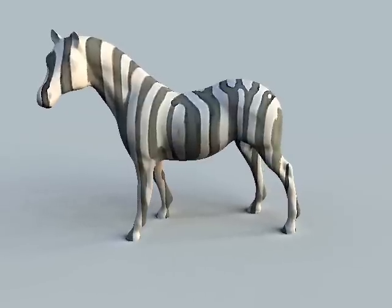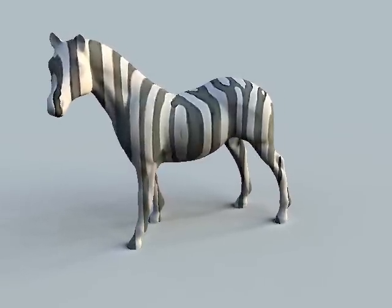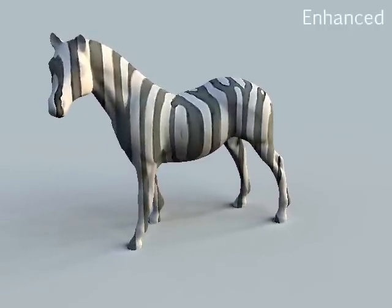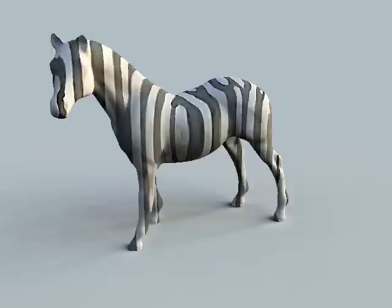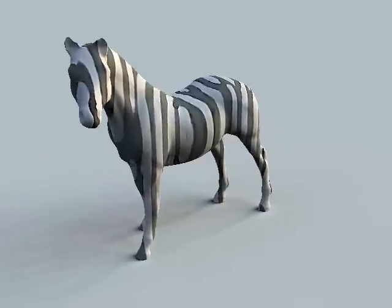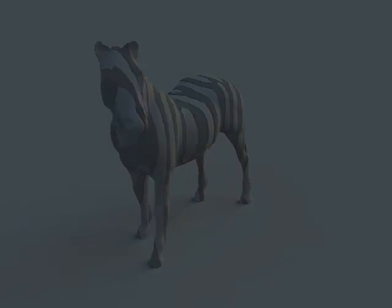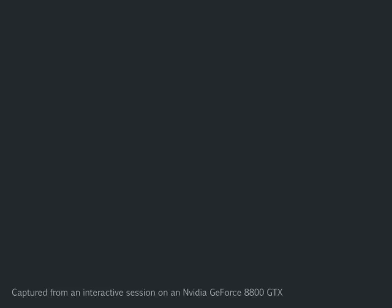Under our enhancement, luminance changes created by texture are also enhanced. This zebra example, whose stripes arise from its reflectance — not geometry — shows that we seamlessly enhance textures.